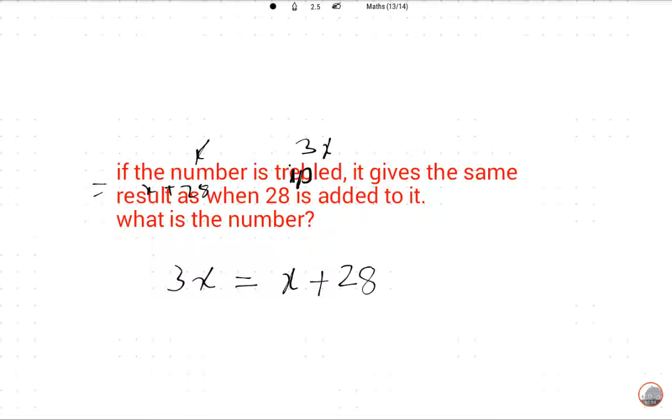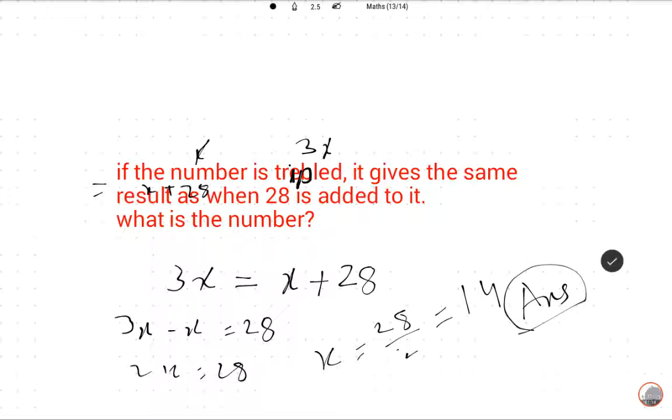Now solve further. 3x minus x is equal to 28, so 2x is equal to 28, so x is equal to 28 upon 2, which is equal to 14. So this is the required answer.